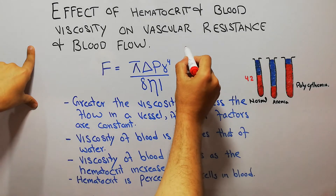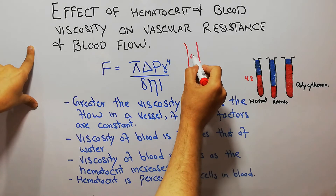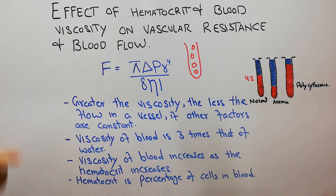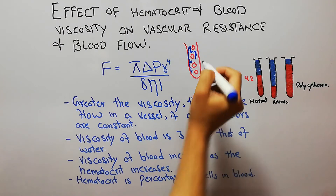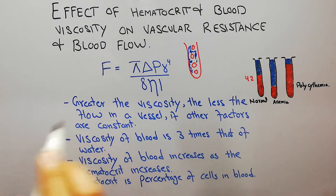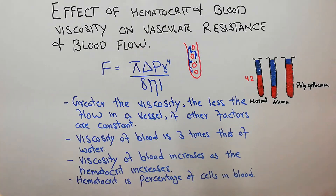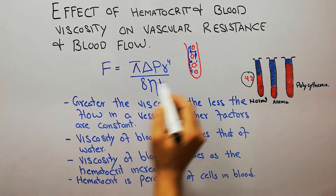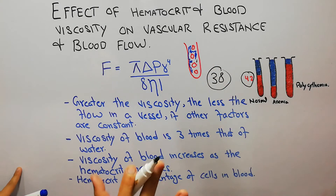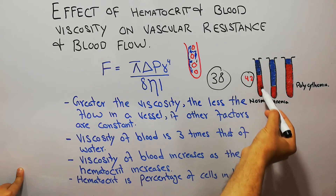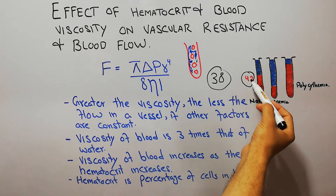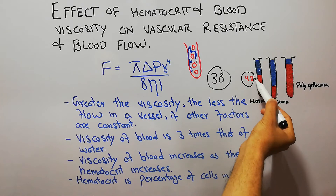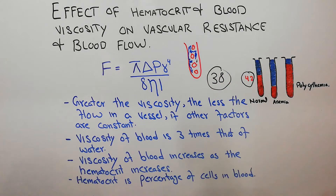If we take blood in a test tube, the blood will have some cells, some fluid, and some proteins apart from ions and other molecules. Hematocrit is basically the percentage of cells in the blood. Normally, hematocrit is around 42 in males and around 38 in females — somewhere around 40. This means that 42 percent of the blood is cells, and the remaining portion is fluid and other substances.